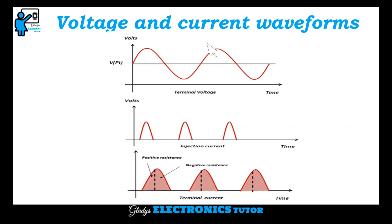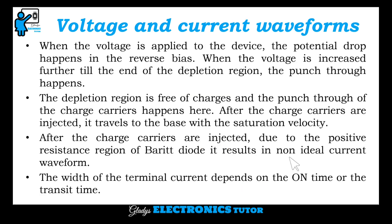This is the voltage and current waveforms. First is the punch-through voltage. This is the terminal voltage and this is the injection current. Then this is the terminal current. This injection current is the current in the punch-through area. When the voltage is applied to the device, the potential drop happens in the reverse bias. When the voltage is increased further till the end of the depletion region, the punch-through happens.